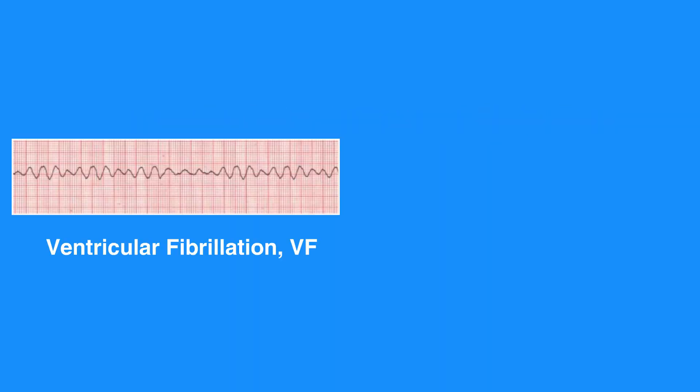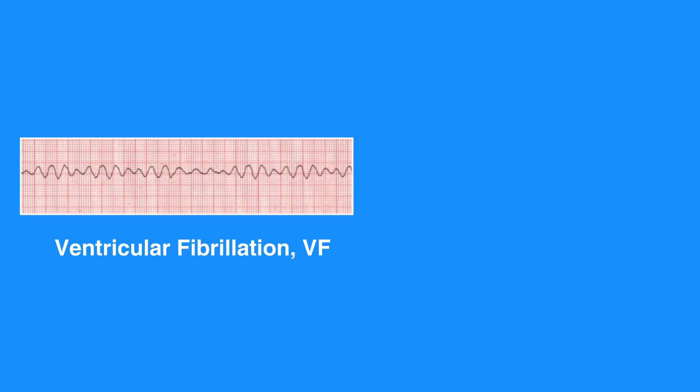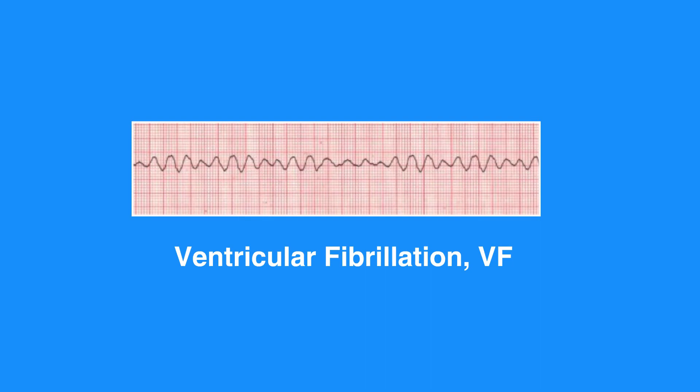Ventricular fibrillation, or VF, and pulseless ventricular tachycardia, or VT, are life-threatening cardiac rhythms that result in ineffective ventricular contractions. VF is a rapid quivering of the ventricular walls that prevents them from pumping. The ventricular motion of VF is not synchronized with atrial contractions.